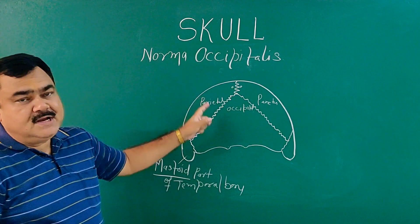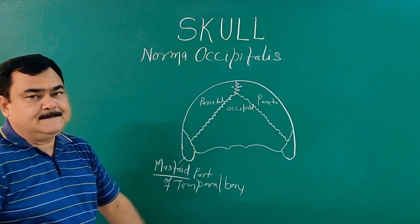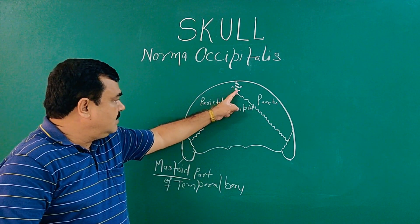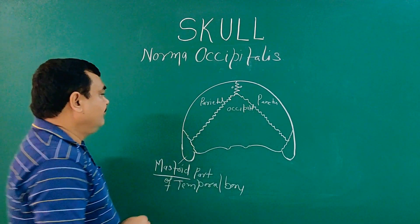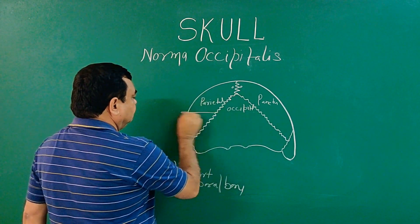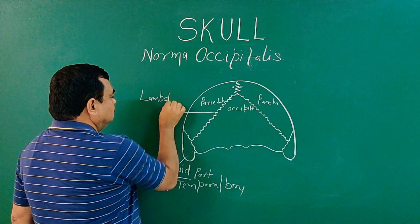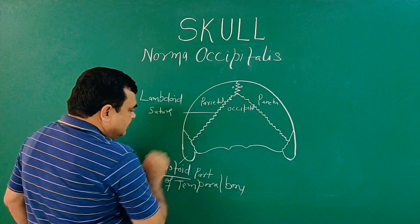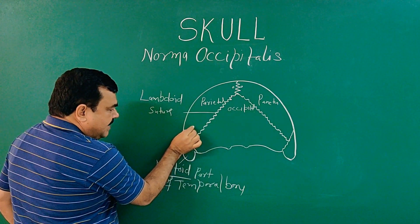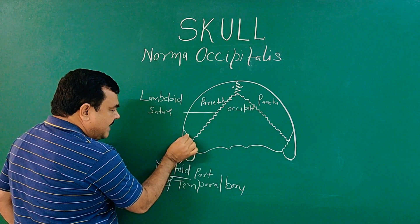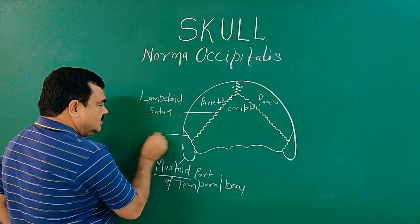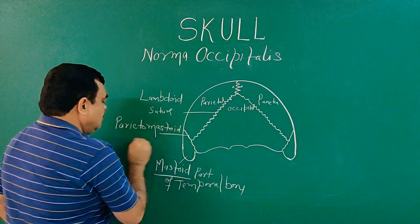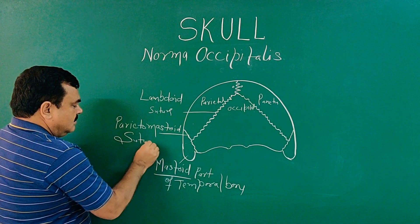So in Norma Occipitalis you can see all these bones and sutures. This suture is the sagittal suture. From here to here, this is the lambdoid suture. And here, between the parietal bone and the mastoid, this suture is the parieto-mastoid suture.